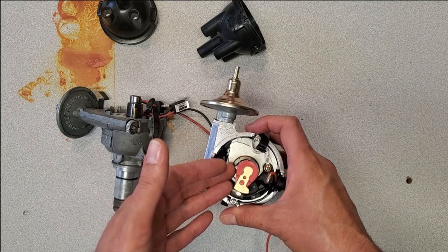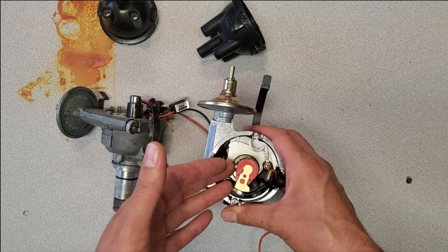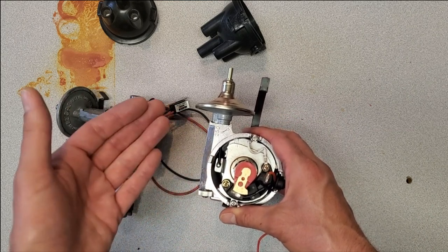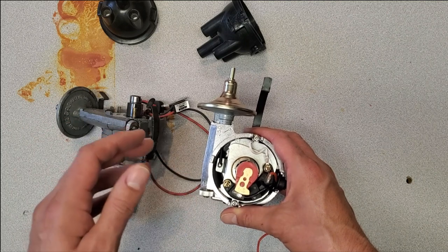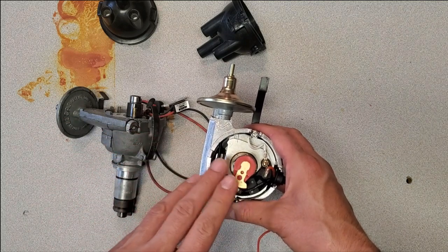If you timed it at top dead center, this would actually produce 40 degrees of advance at, say, 5,500 RPMs or something, and none of these engines needed 40 degrees of advance at that point. At most, they were in the 30s, low 30s. That could potentially damage an engine if it's not adjusted accordingly.